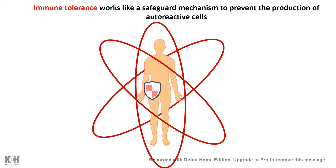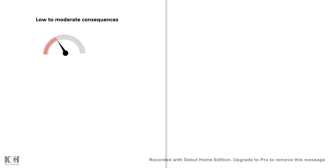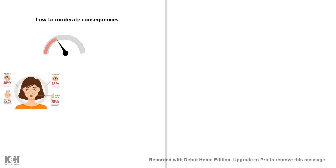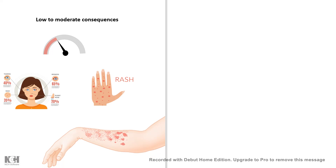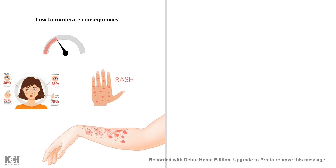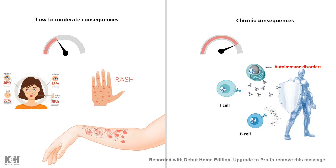But still, things can go wrong. The cells can evade those mechanisms, and there could be low to moderate consequences, which might lead to allergy, rashes, skin blemishes, etc. It can also have chronic consequences, like autoimmune disorders.